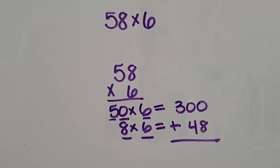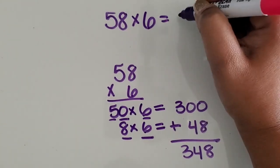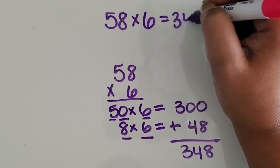Last, you'll have students bring them back together. So, 300 plus 48 is 348. The product of 58 times six is 348.